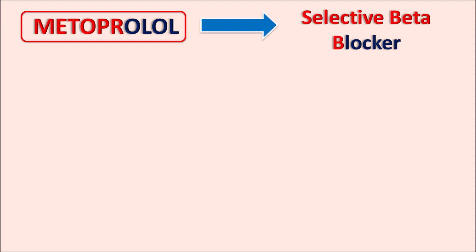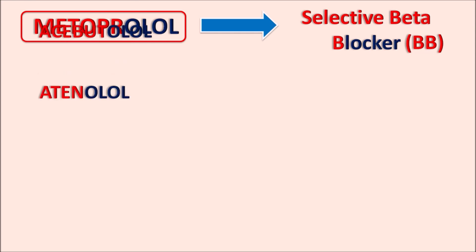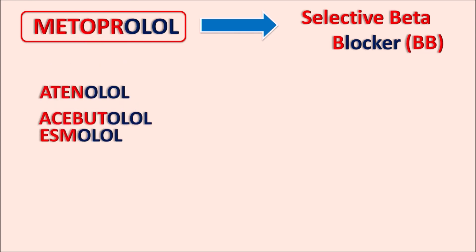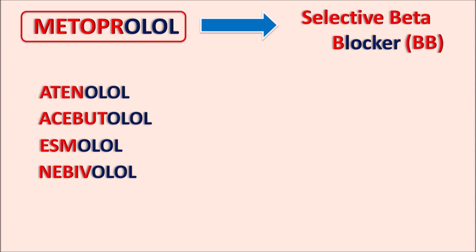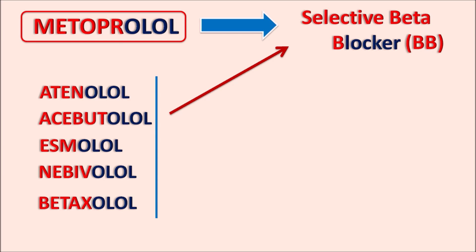Metoprolol is a selective beta blocker. Other selective beta blockers include atenolol, acebutolol, esmolol, nebivolol, and betaxolol. However, the suffix '-olol' is also common for non-selective beta blockers, so by using this suffix alone we cannot identify whether the drug is cardioselective or non-selective.